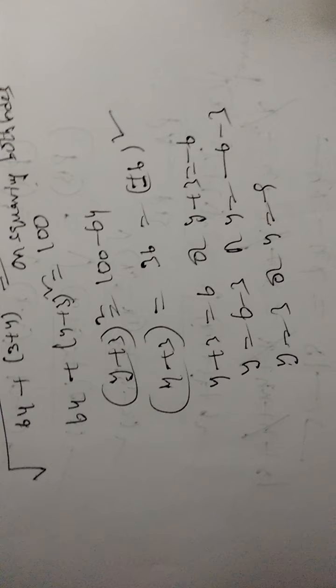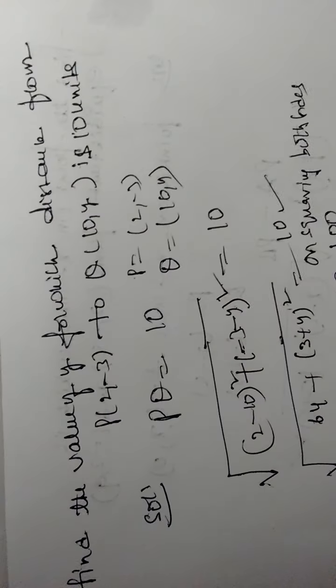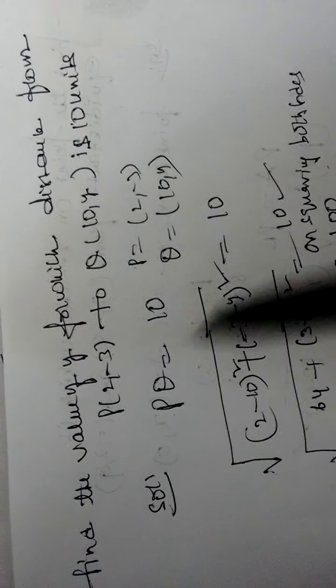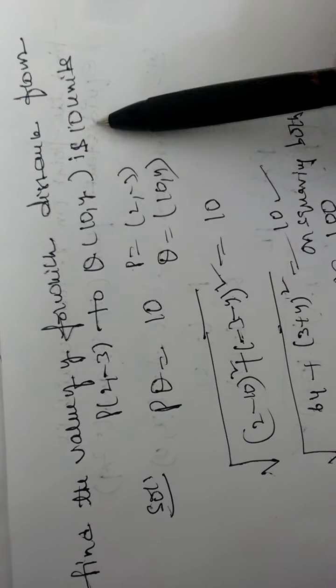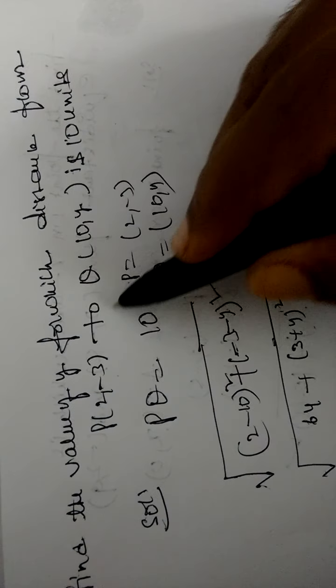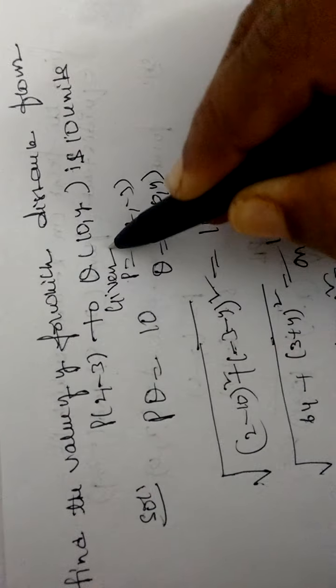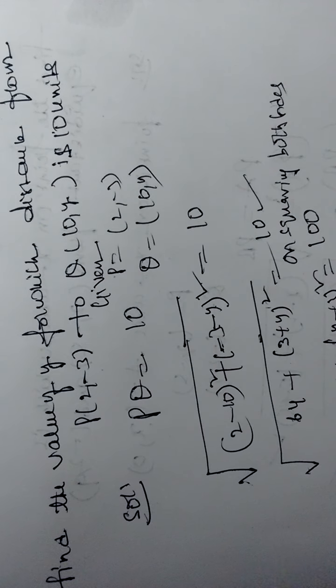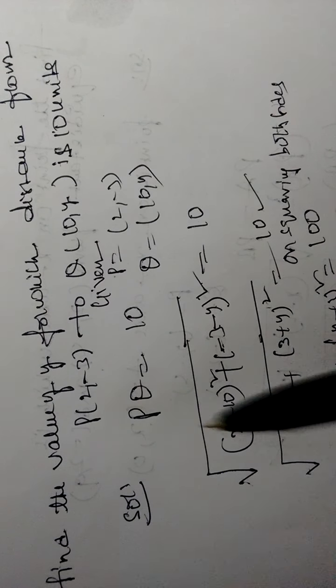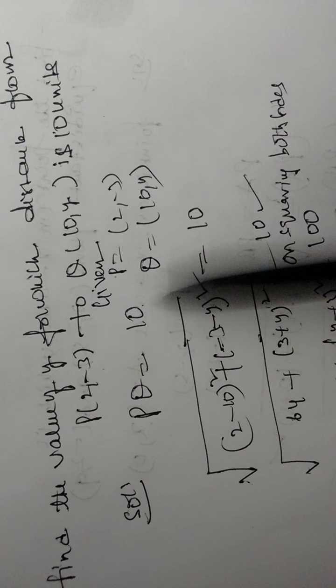It is the solution. Simple question but there's some complication. The question is: find the value of y when the distance between this point and this point is 10 units. Given P, Q, this is given data. Given data means always benefit. When we list the given data, one minimum mark will be awarded. PQ equals 10.